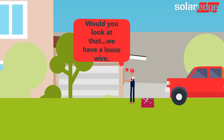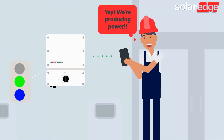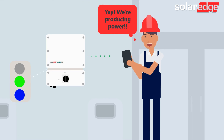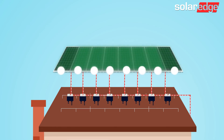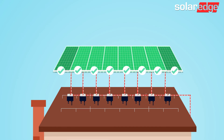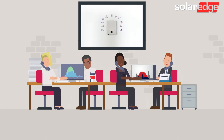Once the issues have been resolved, turn the system back on and enjoy the PV production. And it's as simple as that. However, if you are still in need of assistance, please reach out to the SolarEdge Support Center.